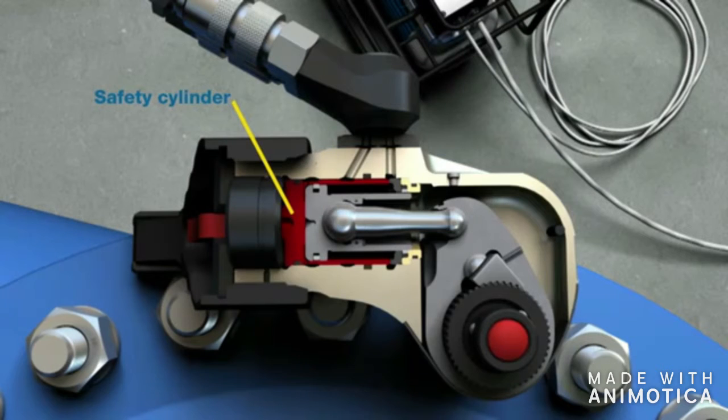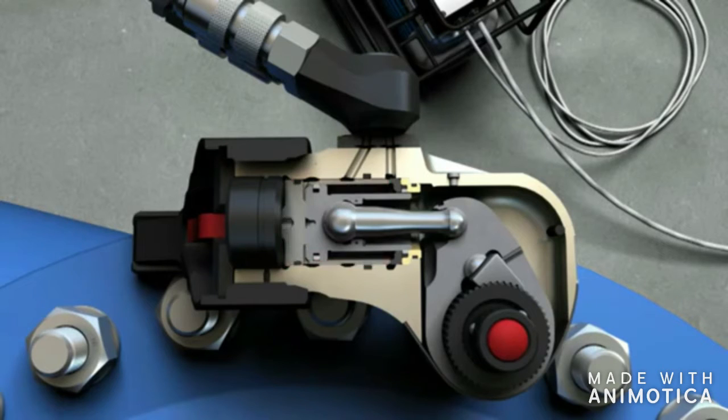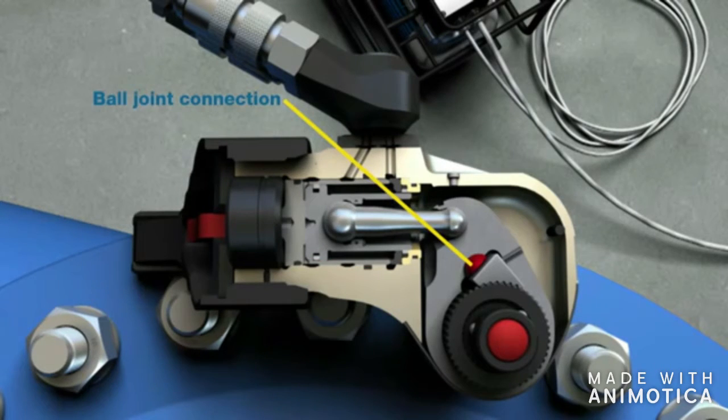Made of high strength material, the safety cylinder allows for high levels of pressure in a lightweight housing. The ball joint connection between the lever and the ratchet provides for a perfect transmission of the generated torque.